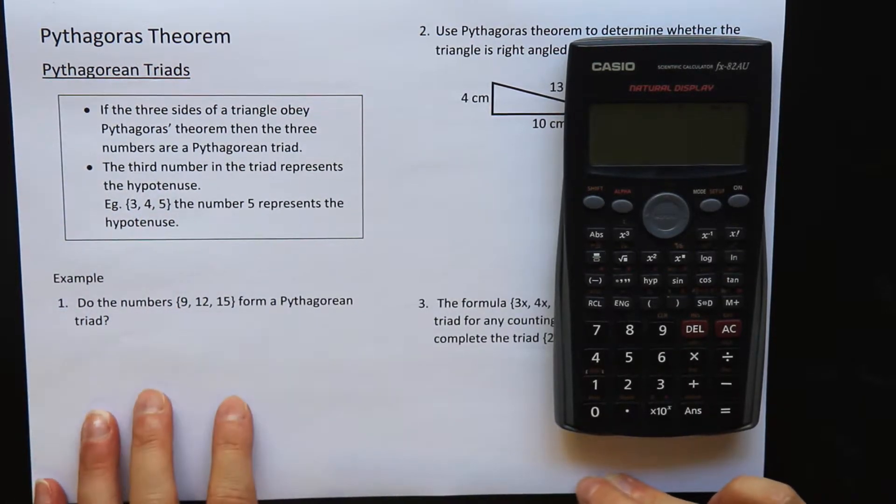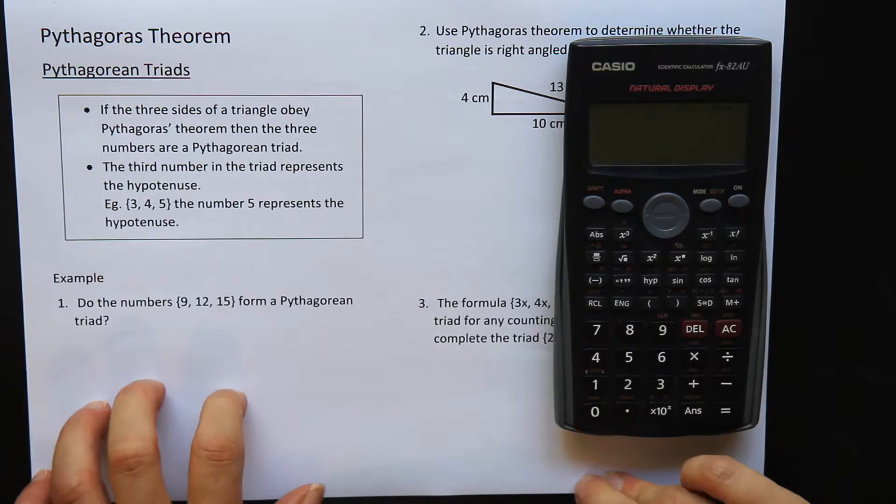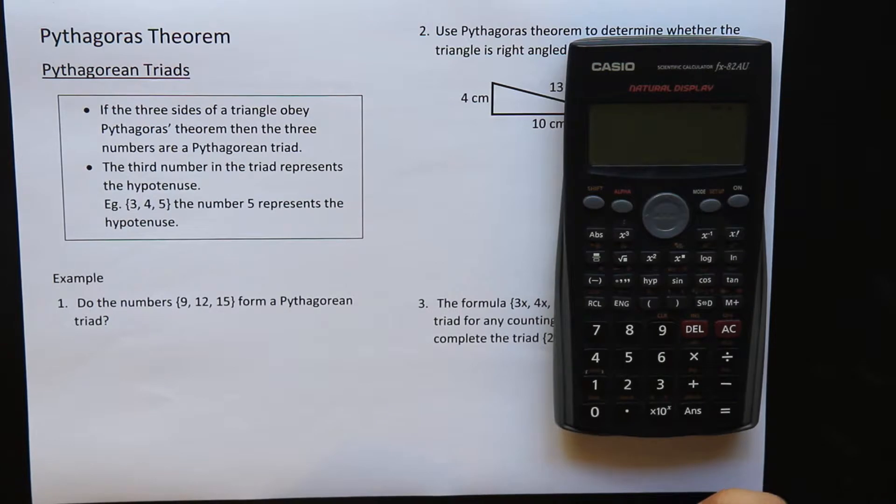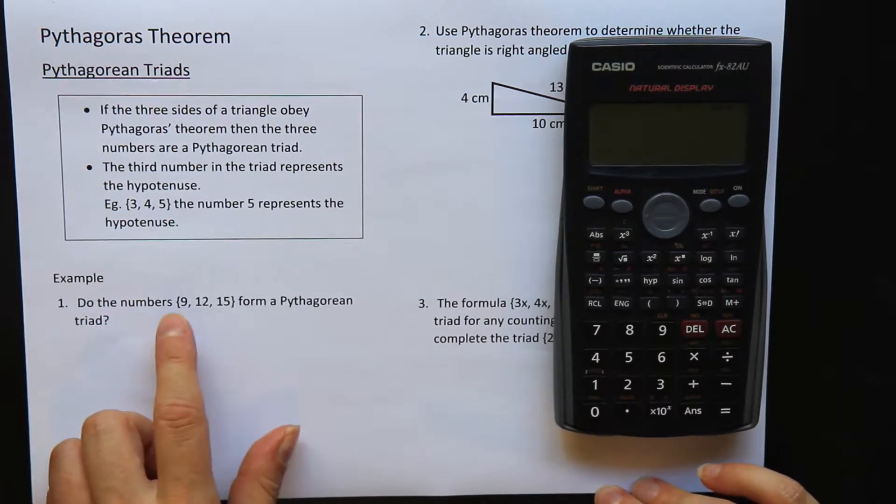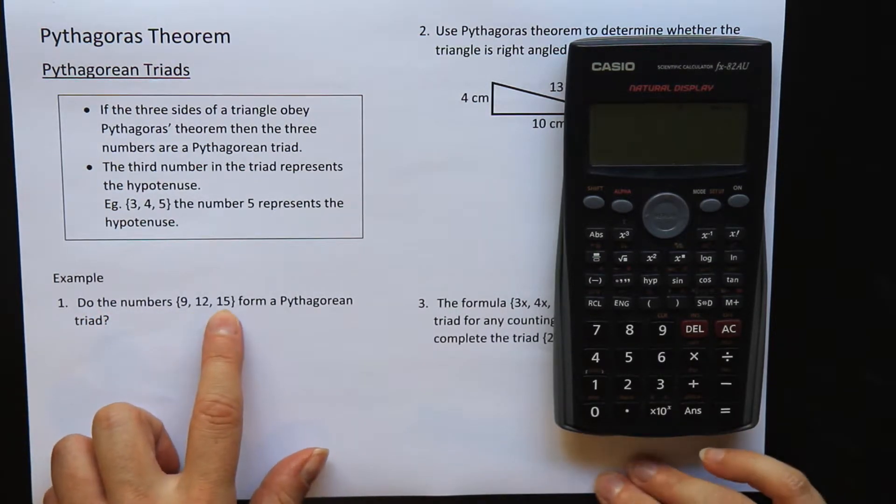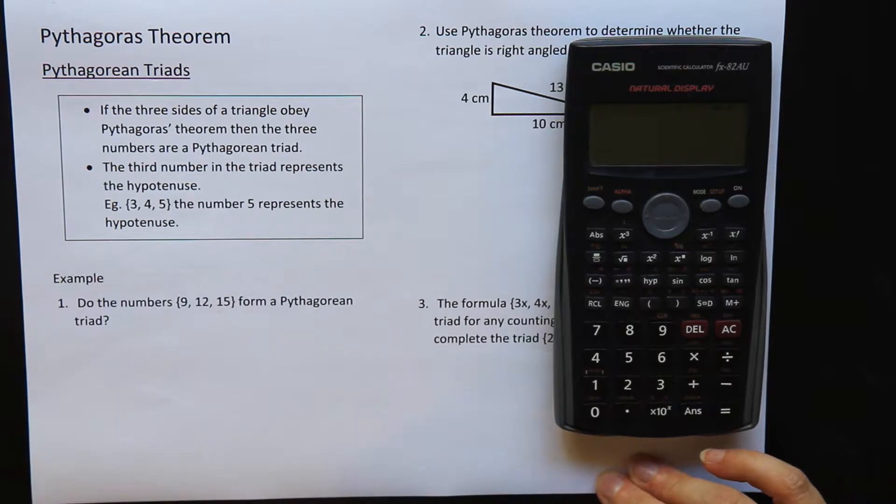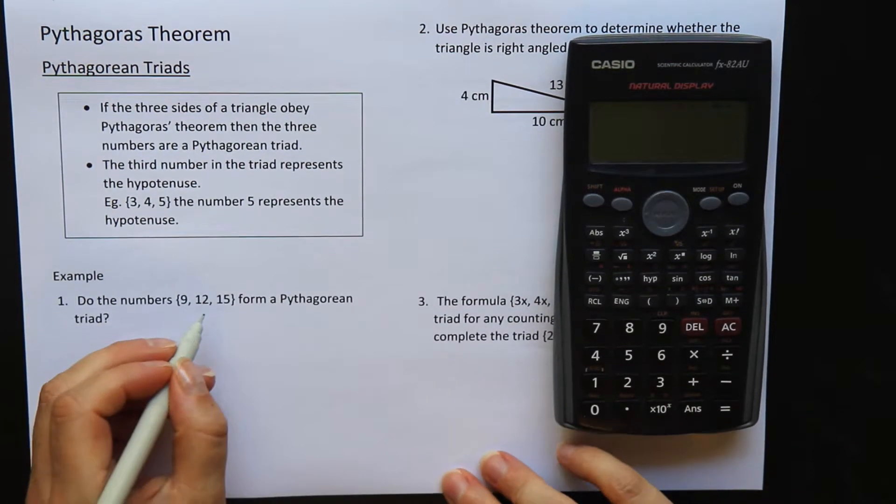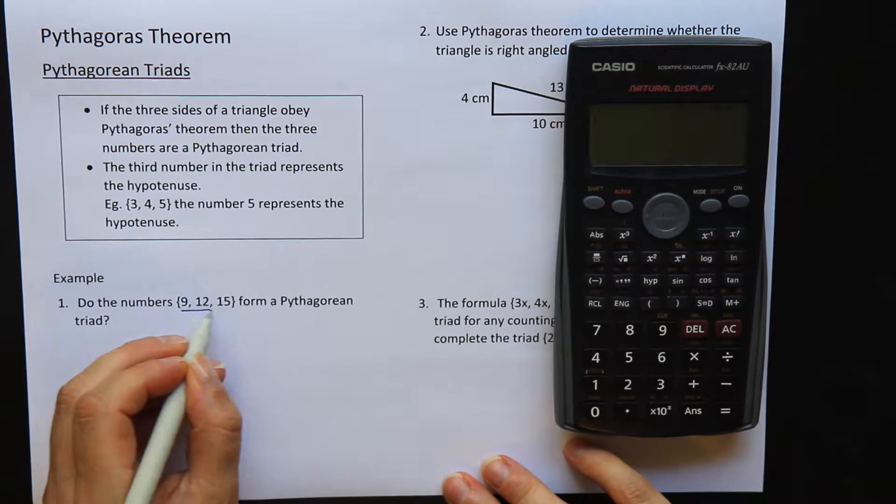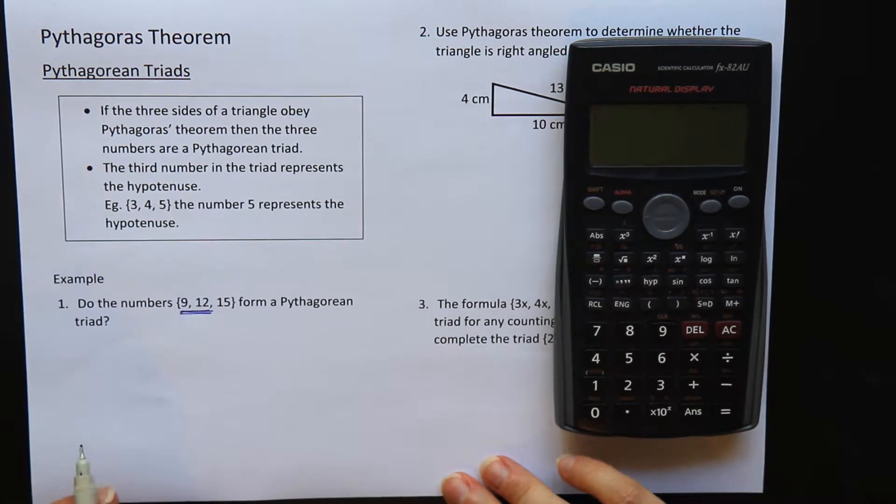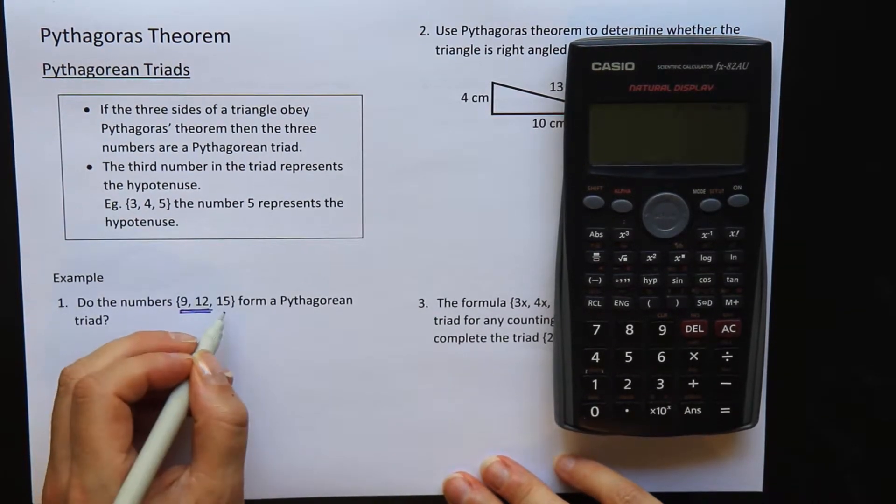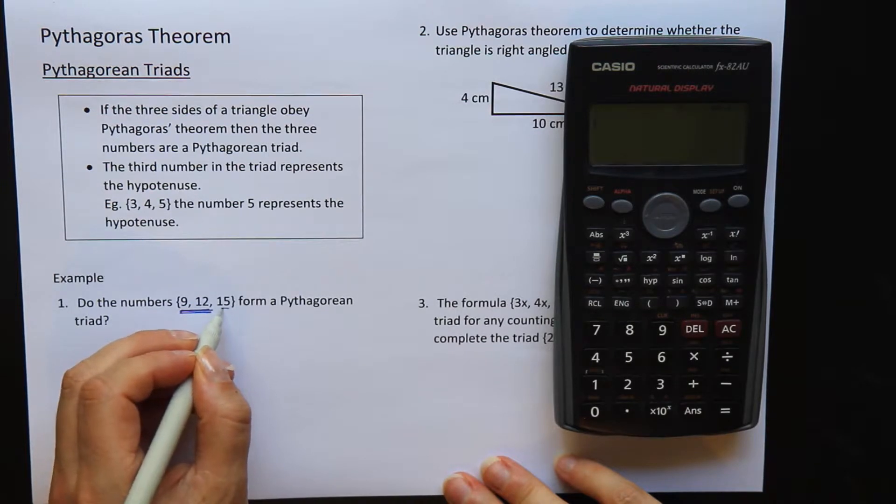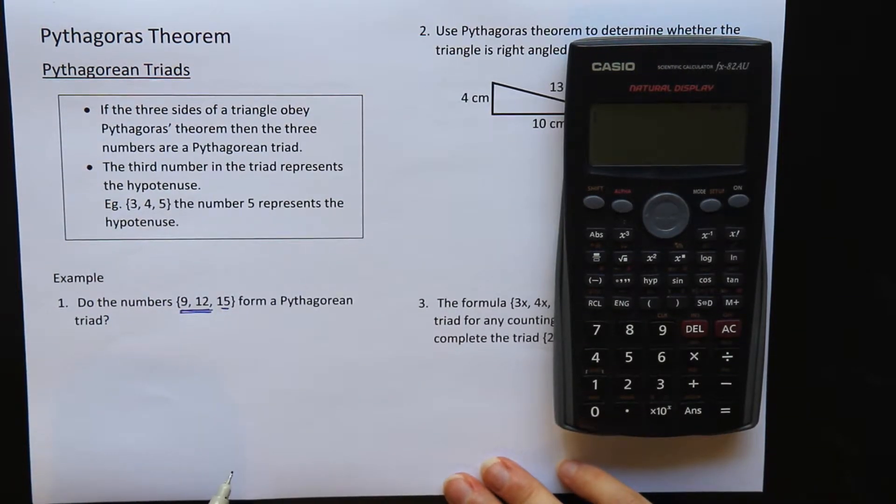So let's have a look at these questions. What we want to do in most of these questions is to prove whether or not something is a Pythagorean triad or not. So that's question one here. Do the numbers 9, 12 and 15 form a Pythagorean triad? To do that, what you do is you take your two shorter sides, these two, the 9 and the 12, and we do our Pythagoras' Theorem to see if we get this number for our hypotenuse.